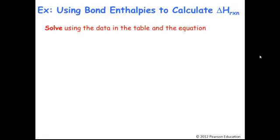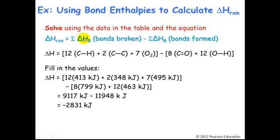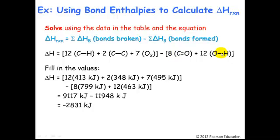For bond formation, we're going to form eight carbon-oxygen double bonds — two per molecule times the stoichiometric coefficient of four — and 12 oxygen-hydrogen bonds, two per molecule times six with the stoichiometric coefficient.